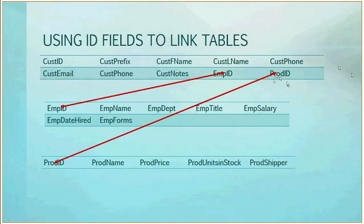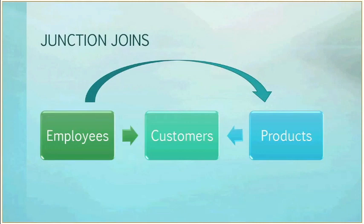In the customer table I may also have a product ID field to know what product they purchased, linking to the product table. So I'm starting to create links between these tables. Sometimes you end up with junction joins — indirect links. If I'm linking the employee table to customers and the products table to customers, I get an indirect link between employees and products. So all three are linked, and if I wanted to do a query to find information from all three tables, I could do that.